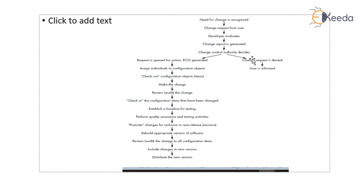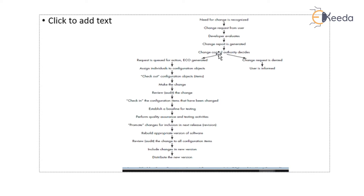This can be explained with the following diagram. The need for change is recognized. The change is requested from the user. The developer evaluates it. A change report is generated and forwarded to the change control authority. The change control authority decides whether the change has to be incorporated or rejected. If the authority decides to reject the change — finding it unsuitable or not important — the user is informed.